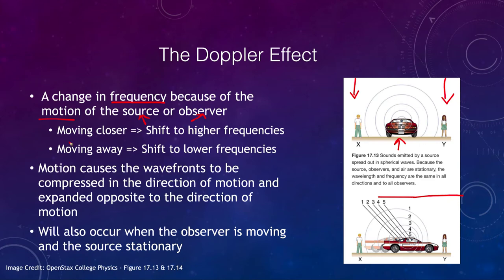However, when the vehicle is moving, the waves get compressed on the leading edge. So the person on this side hears the sound at a much higher pitch — a higher frequency — because all of those wave crests are pushed together. The wavelength is pushed to shorter values, which means a higher frequency. So when something is moving closer, it is a shift to a higher frequency.